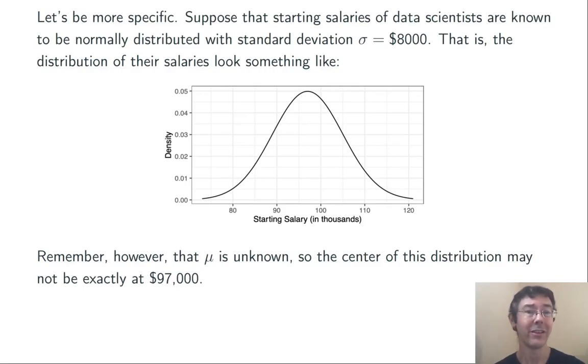The distribution of starting salaries has a bell shape. It looks something like what I've pictured here. Now, we know the standard deviation, but not the mean. So, I've centered this graph at $97,000, but let's bear in mind it could actually be shifted a little to the left or right.